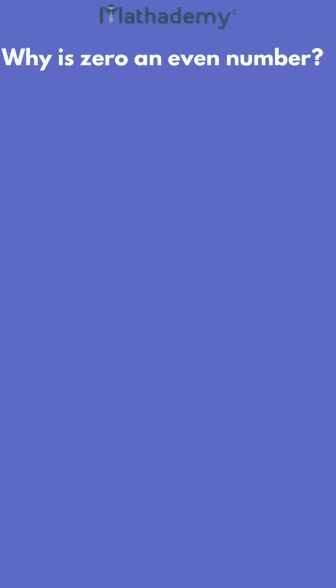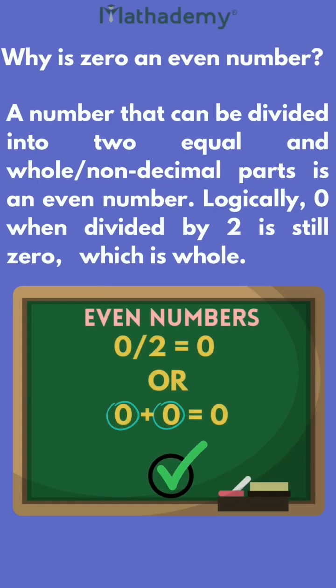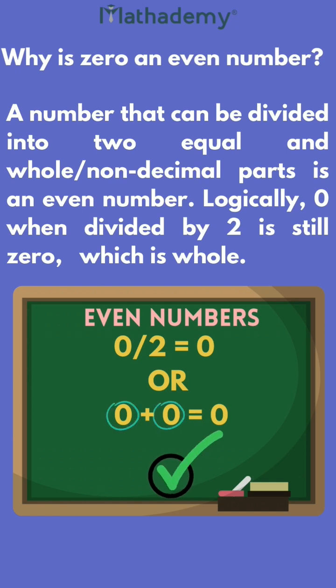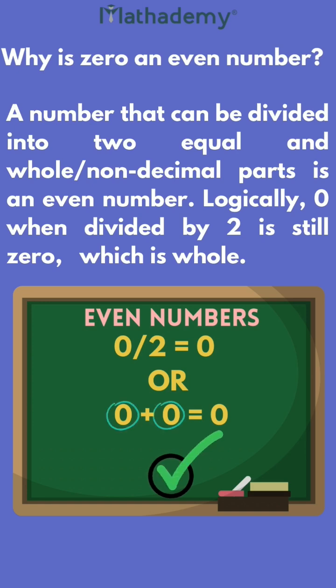Why is 0 an even number? A number that can be divided into two equal and whole, or non-decimal, parts is an even number. Logically, 0 divided by 2 is still 0, which is whole.